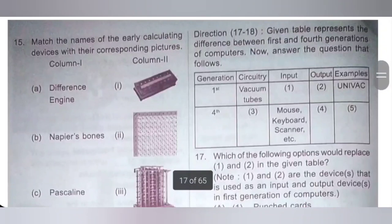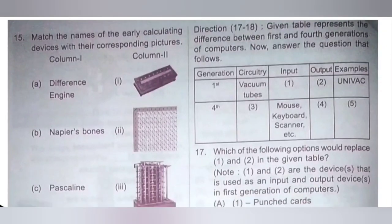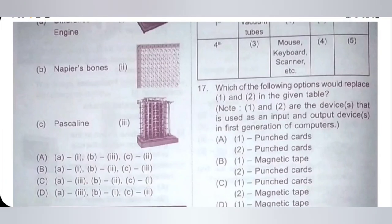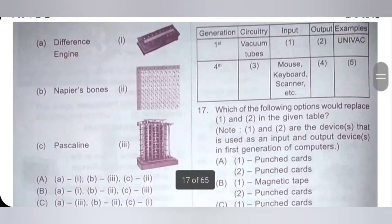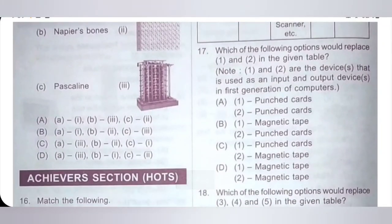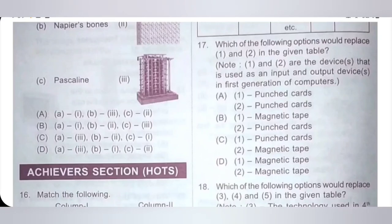17th question: The given table represents the difference between 1st and 4th generation computers. Which option would replace 1 and 2 in the table? Note: 1 and 2 are the input and output devices used in 1st generation computers. In 1st generation, input and output devices are punch cards — paper cards containing punched holes representing data. Option A is correct: both 1 and 2 are punch cards.